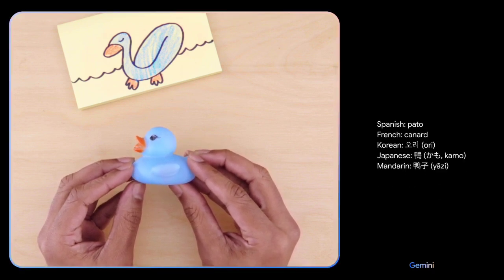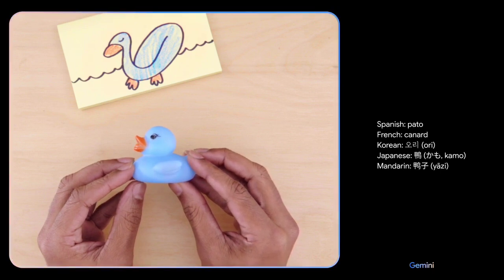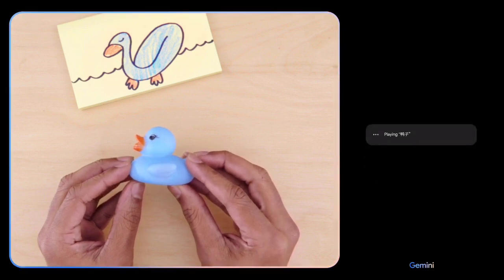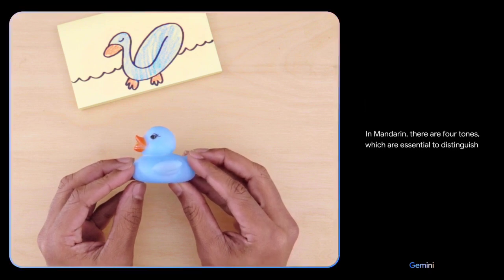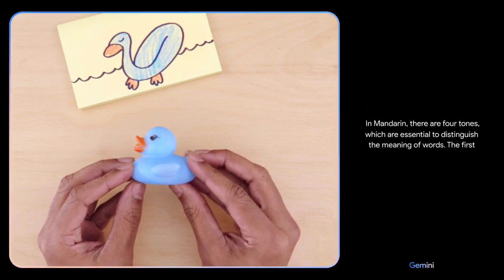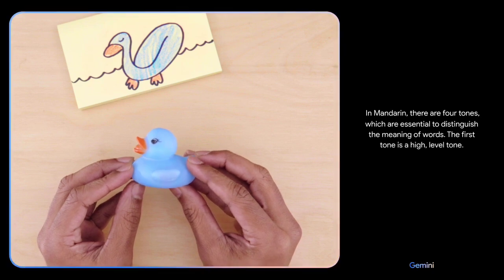Ooh, can you explain how to pronounce the Mandarin one? Is it ya-tsu? Ya-tsu is pronounced with a first tone. In Mandarin, there are four tones, which are essential to distinguish the meaning of words. The first tone is a high level tone. Oh, okay.